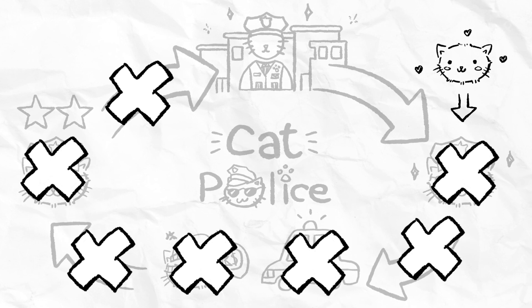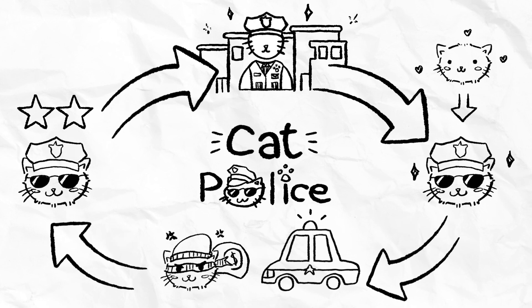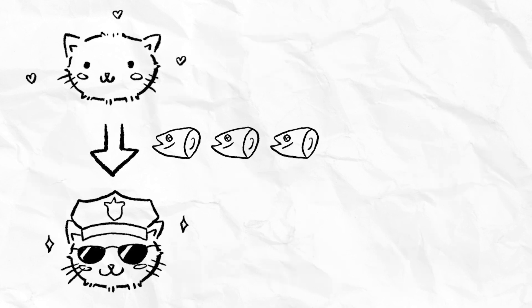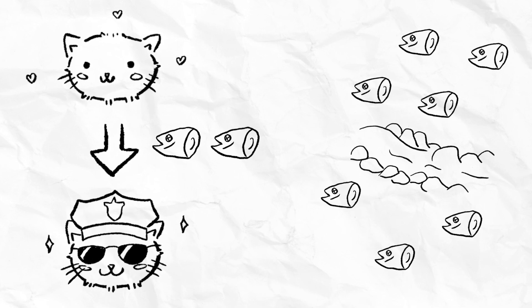This breaks our experience's core loop. To fix Cat Police's core loop and improve engagement, we could either reduce the fish heads required to turn a cat into a cat cop or make the river produce more fish.